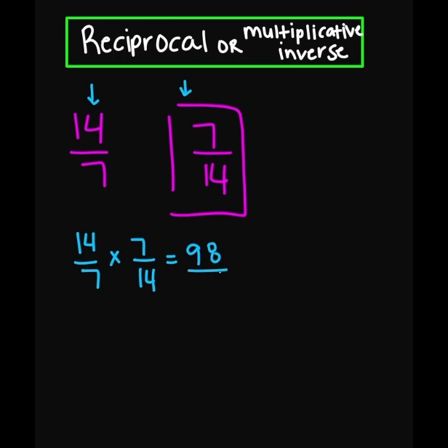In my denominator, 7 times 14 is also going to equal 98. 98 divided by 98 equals 1. So we know that 7 over 14 is the correct answer.